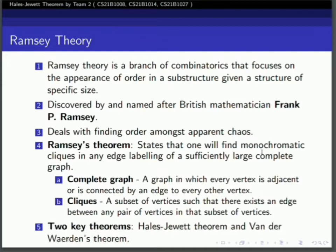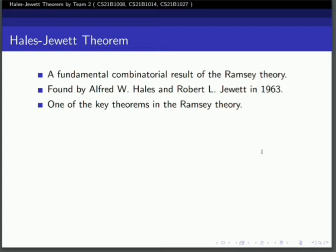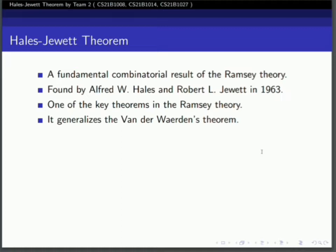The Ramsey theory mainly consists of two key theorems: the Hales-Jewett theorem and the van der Waerden theorem. The Hales-Jewett theorem is a fundamental combinatorial result found by Alfred Hales and Robert Jewett in 1963. It is one of the two key theorems and generalizes the van der Waerden theorem.